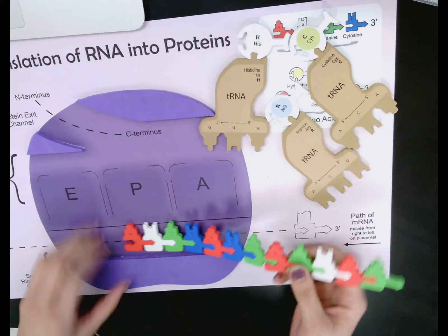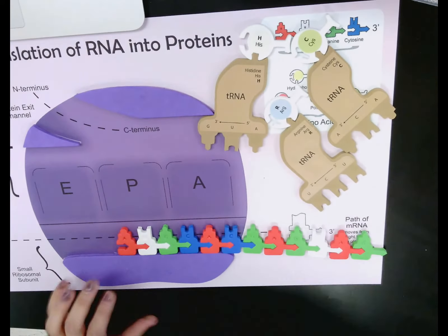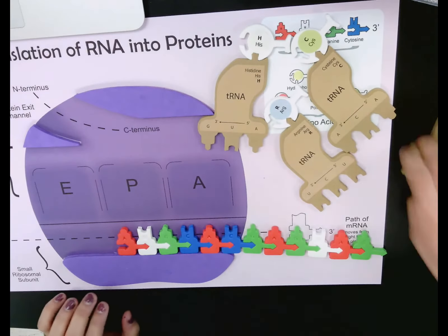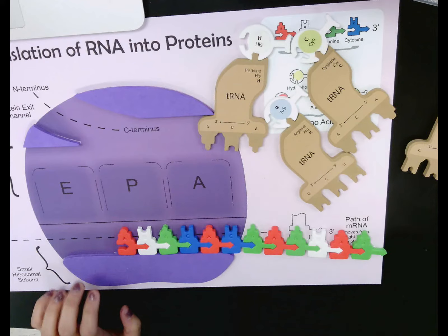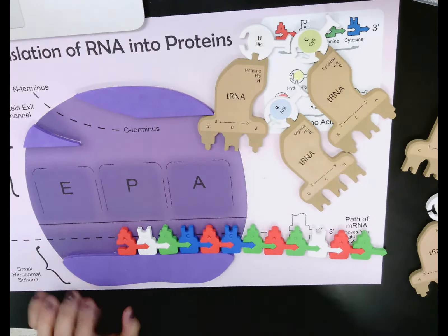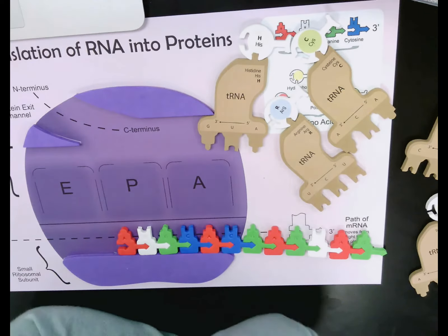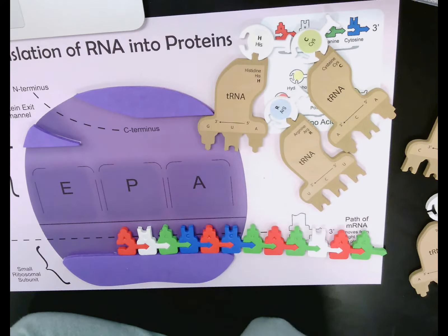One thing that's confusing for a lot of you is the differences between each of these RNAs. Remember, anytime we're using an RNA — whether it's tRNA, rRNA, or mRNA — we are going to use the nucleotides A pairing with U and G pairing with C.